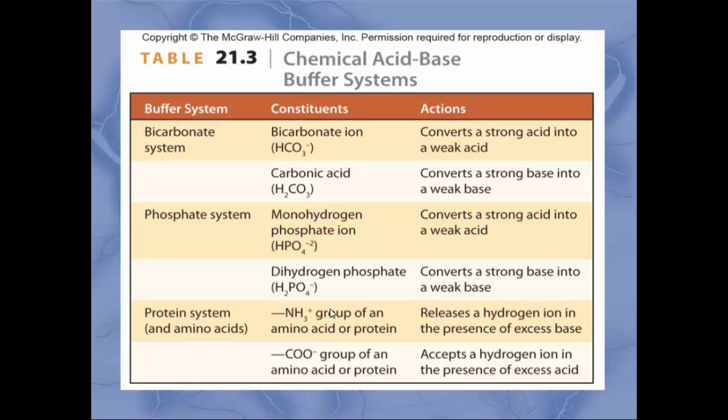You should be able to identify which of these are buffer systems: the bicarbonate system (including carbonic acid and bicarbonate ion), the phosphate system, and the protein system. All three are methods the body uses to help control hydrogen ion concentration so body fluids don't become too acidic.